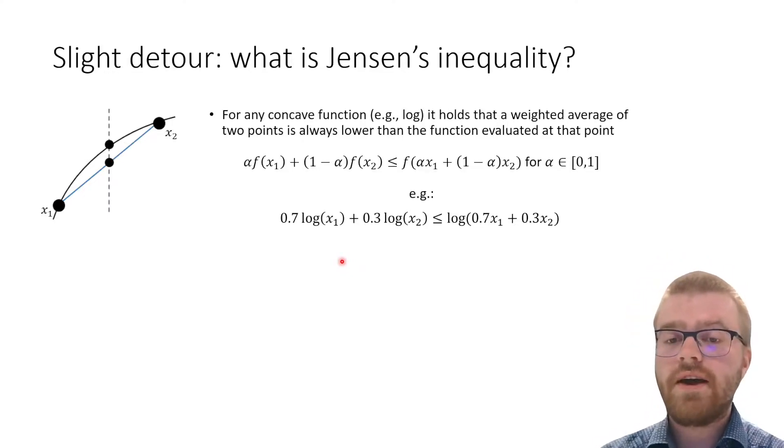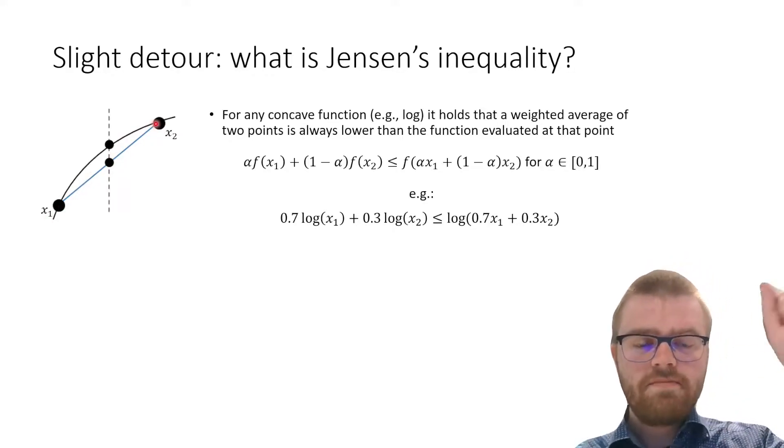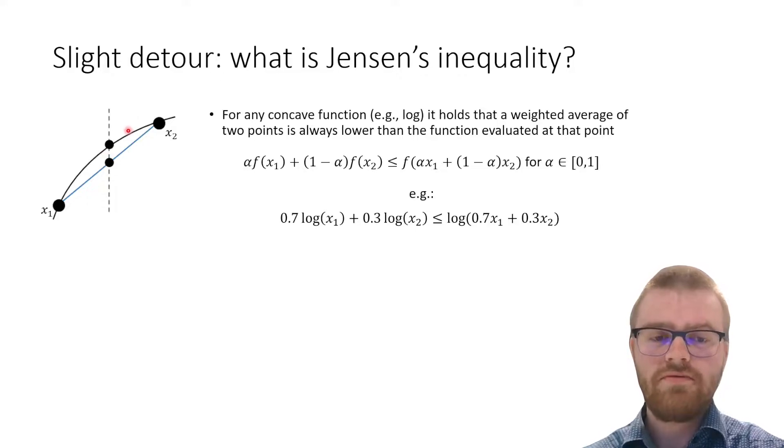Jensen's inequality is actually fairly simple. It states that if we have a concave function, if we evaluate this function at two points, x1 and x2, if we draw a line between x1 and x2 directly, every point on this line is going to be below that function, which is of course the definition of a concave function.